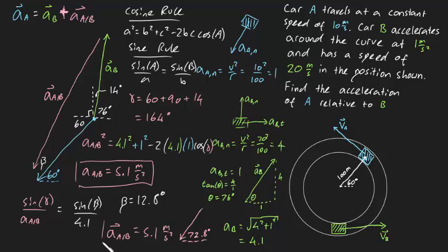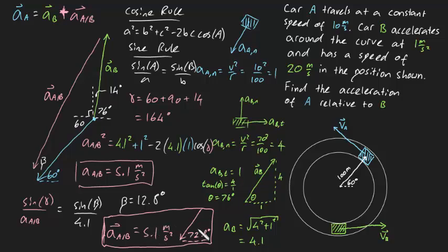That's our answer — let's box this off. Notice it's a vector, so we've given a magnitude and a direction. If you're uncomfortable providing an answer in terms of angles, feel free to deconstruct this in terms of i and j components — you should get full marks for that too. Alright guys, that's this problem done. Cheers.